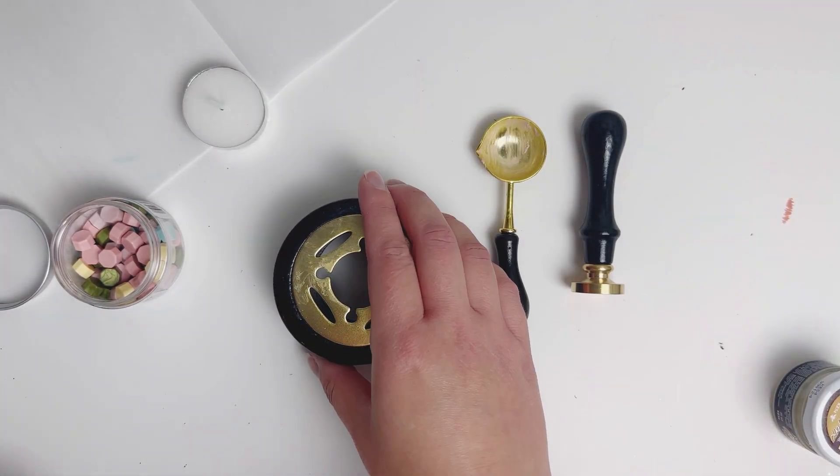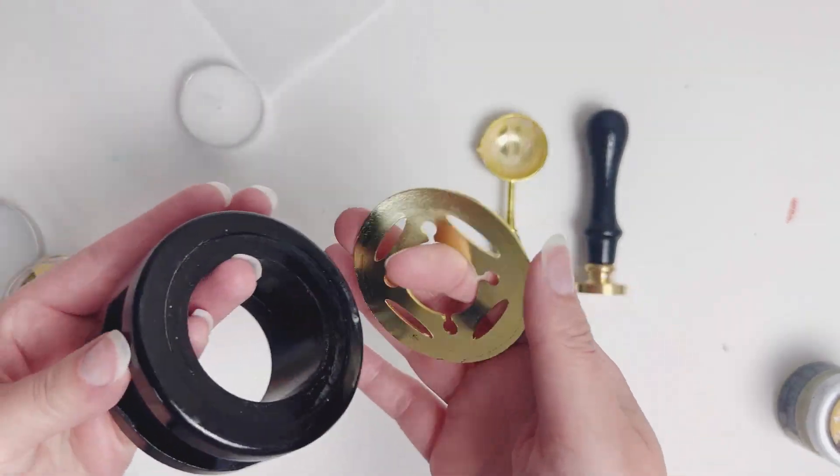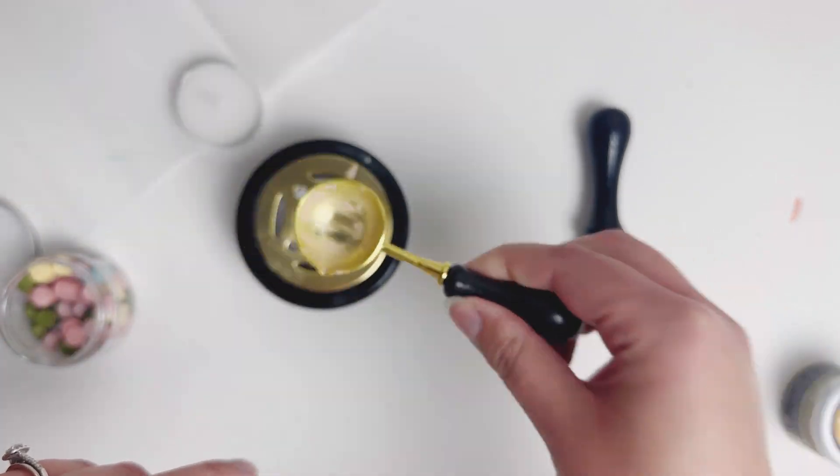Hey crafty friends, Emily with you today and I'm going to be showing you how to use some wax. Here I have some honeybee wax with the honeybee wax melting furnace. In the spoon I have a little wax on there.